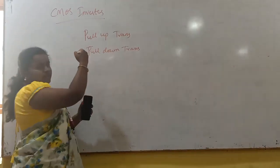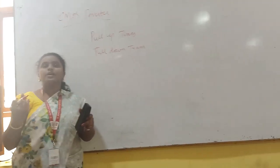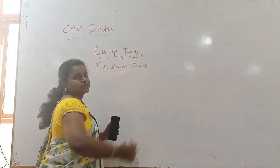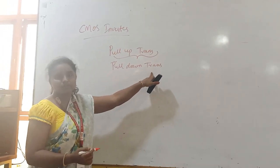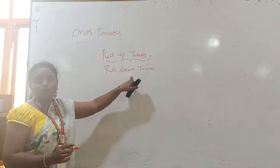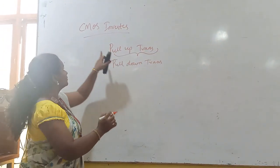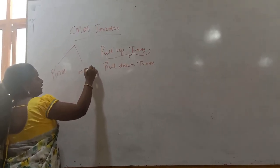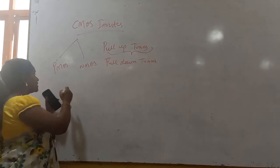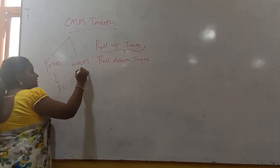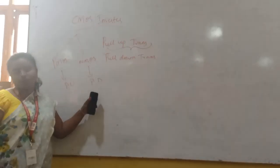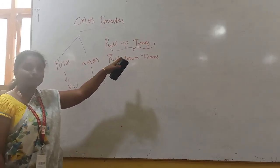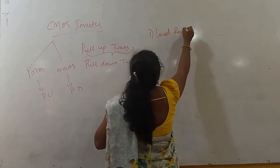Before entering into this, we will be having 3 different various pull-ups. How we are going to vary it? By the pull-up transistor only. The pull-up transistor — that will be the NMOS transistor only. The CMOS transistor will be the combination; that means it will be having the PMOS and the NMOS transistor. So the pull-up transistor will be PMOS transistor and the pull-down transistor will be the NMOS transistor. Before entering into this CMOS inverter, as I said, we will be having 3 different various pull-ups.